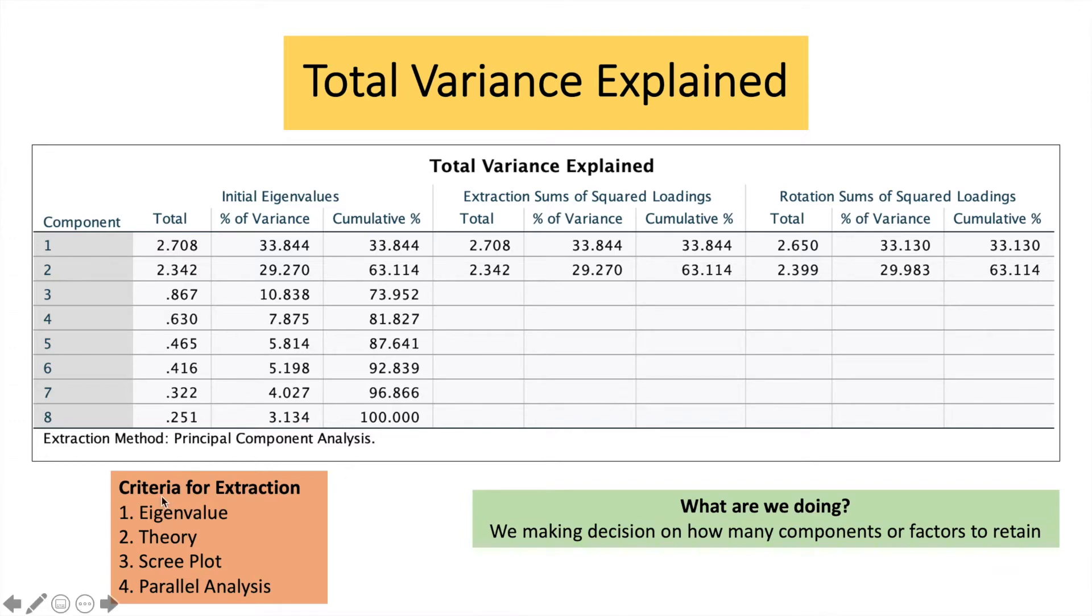So first, we look into eigenvalue. If you look at the first part here, we had eight items. And what SPSS has done, it has just maintained the first two here. We have two components over here.